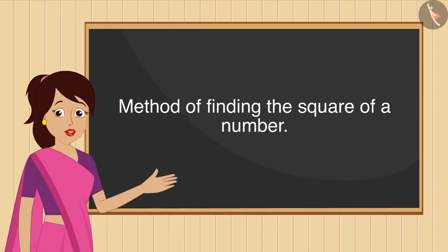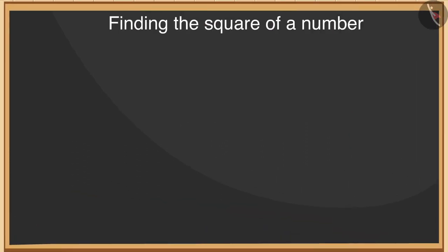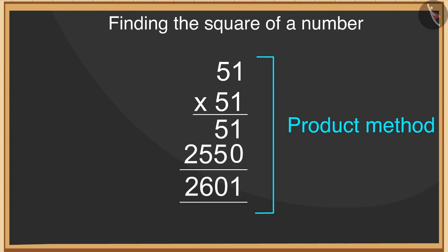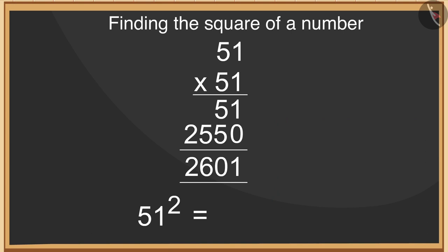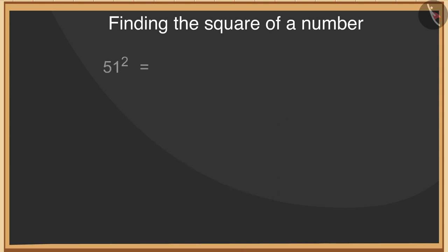We will now understand the method for finding the square of a number. As numbers get bigger, it becomes more difficult and time-consuming to find their square using the product method. For instance, to find the square of 51 we would have to multiply 51 by 51. Instead, we can write the square of 51 as the square of (50 + 1) and solve it in this way.